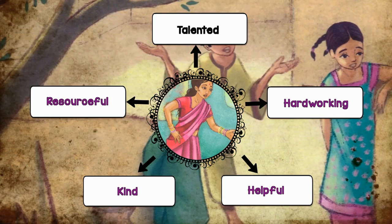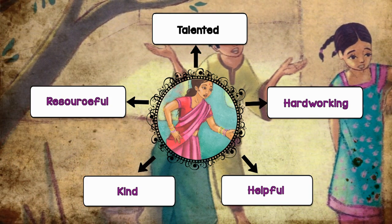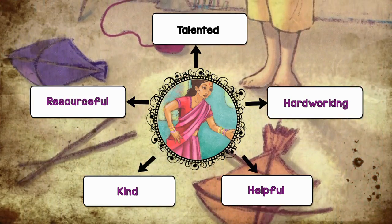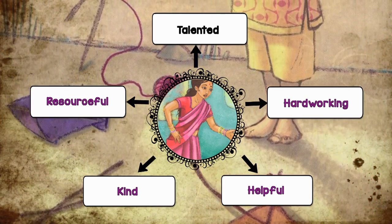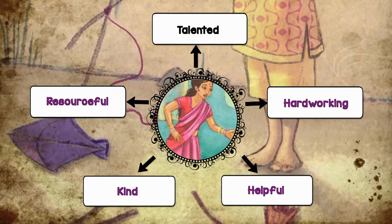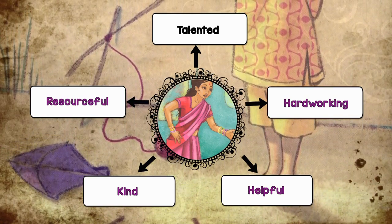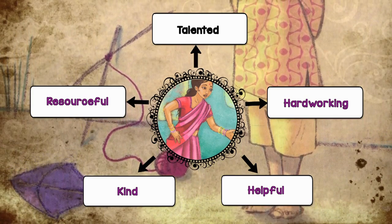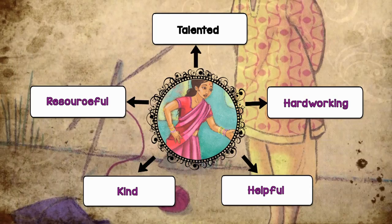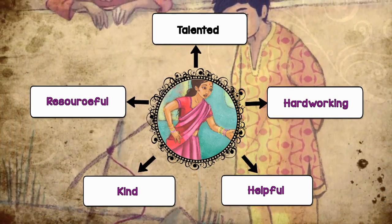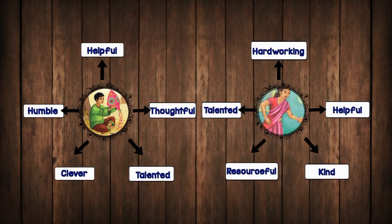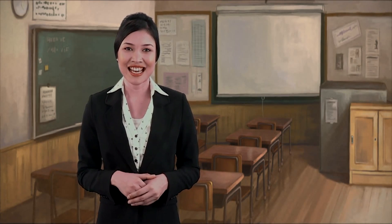Furthermore, she's a resourceful person. On page 20, when she ran out of paper for her sari patterns, she used Anil's kite paper. She also used his strings when she ran out of thread. This showed that she's full of creative ideas in problem solving. And that's what I think of Anil and his mother. I wonder what your answers are — share them with your teacher or friends.